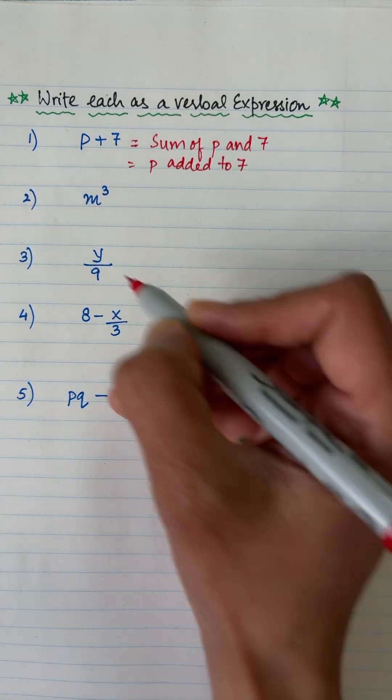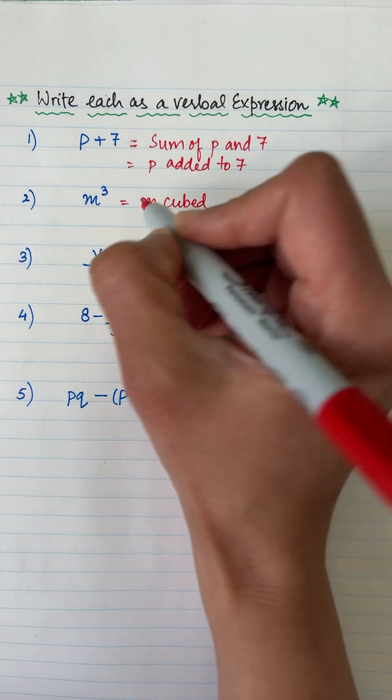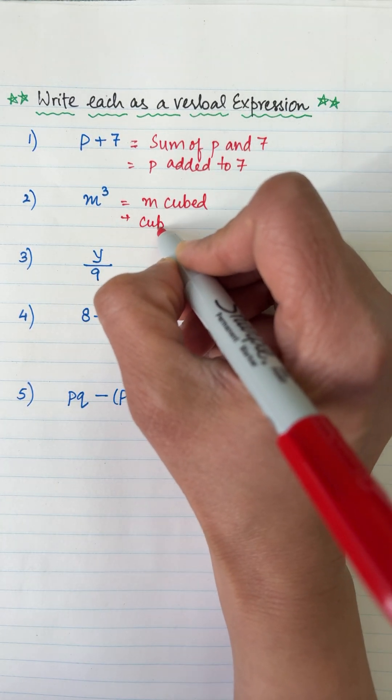M cube is m cubed. If someone wants to write cube of m, that is also correct.